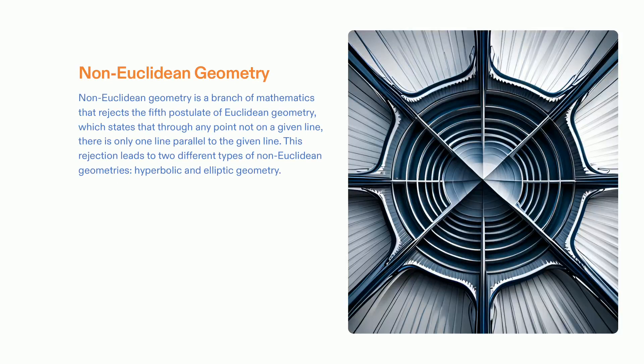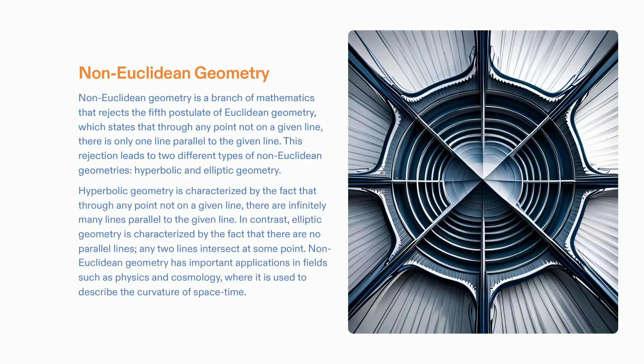Non-Euclidean geometry is a fascinating branch of mathematics that challenges Euclidean geometry's limits. Its most distinctive features are hyperbolic and elliptic geometries. Hyperbolic geometry is recognized by its innumerable lines that intersect any point that is not on a given line. Elliptic geometry, however, is known for its absence of parallel lines — any two lines intersect. These ideas have had a significant effect in many areas, particularly physics and cosmology, where they can be implemented to explain the curvature of spacetime.